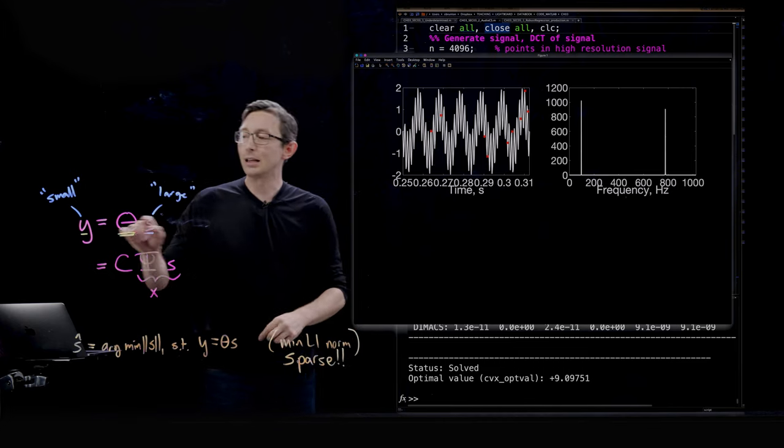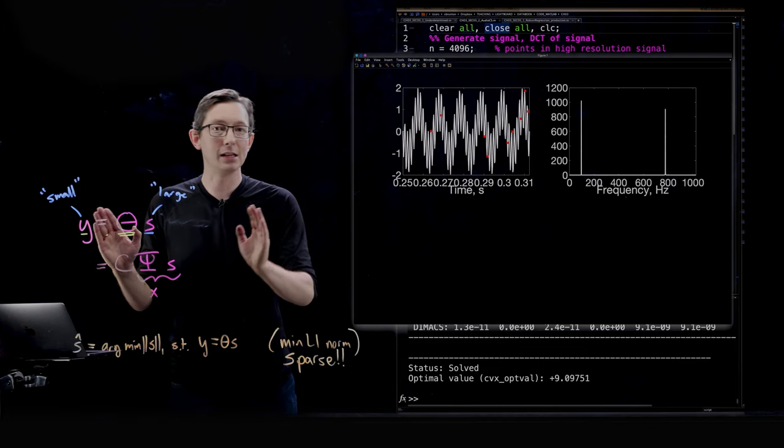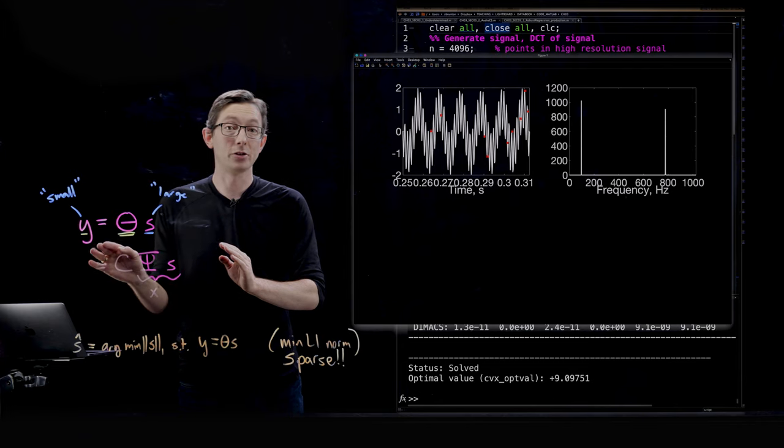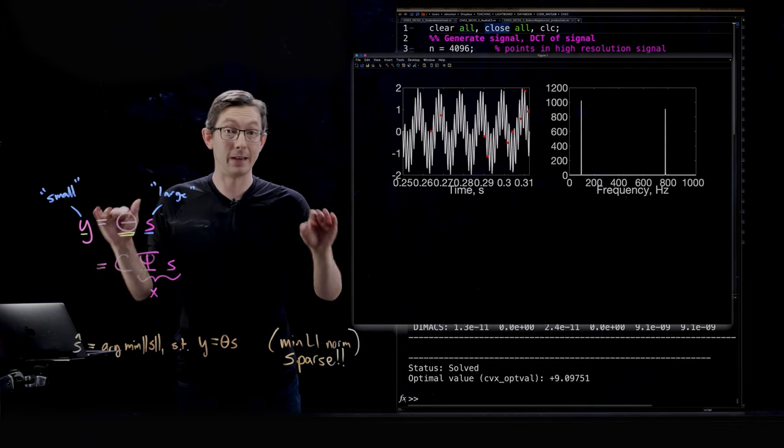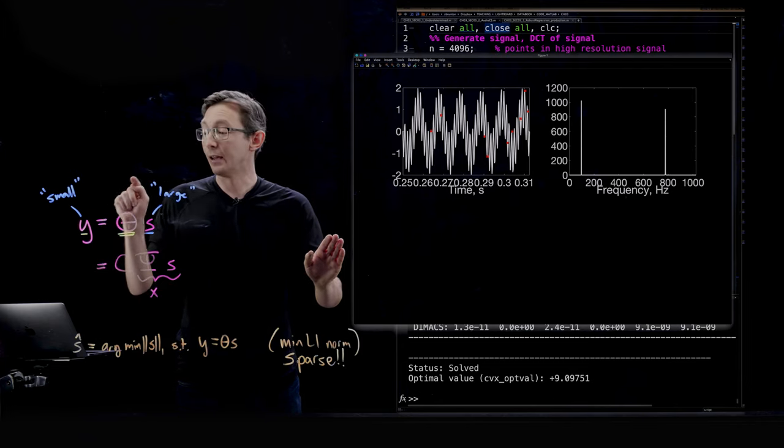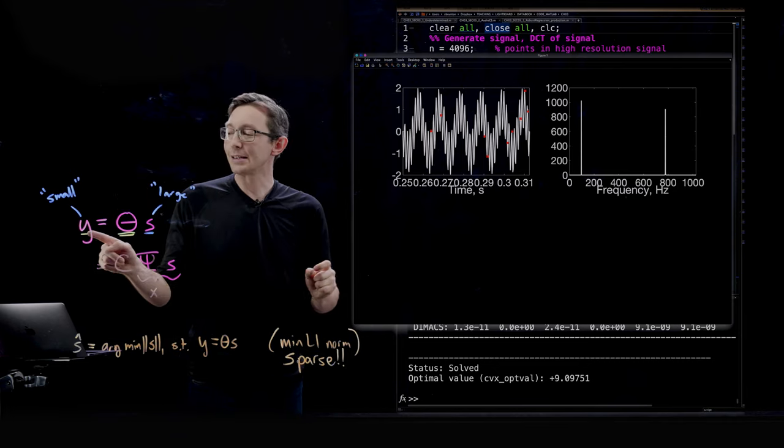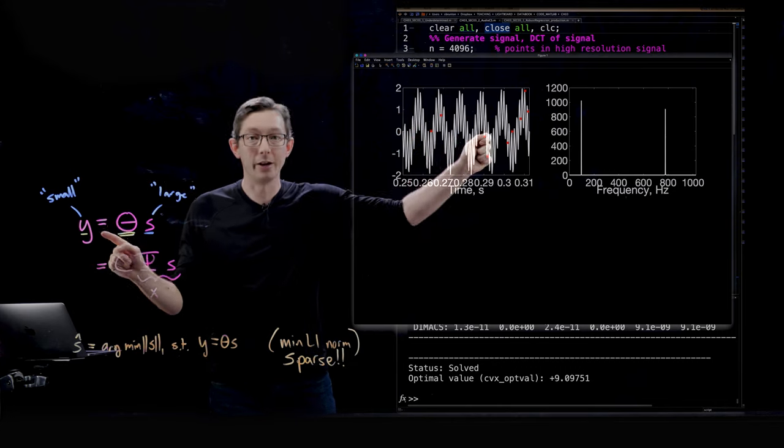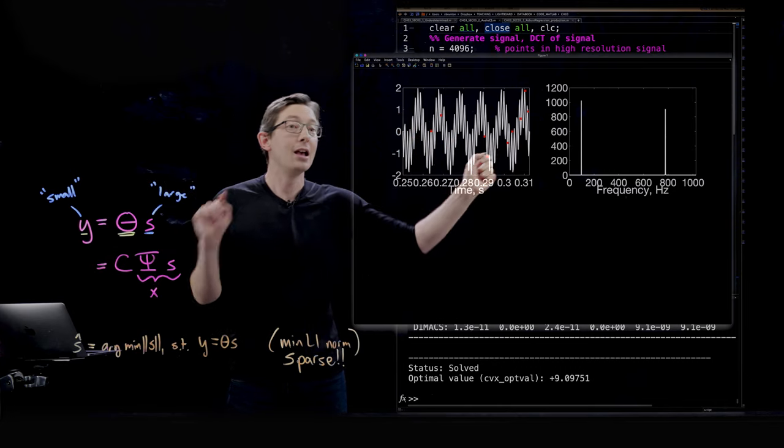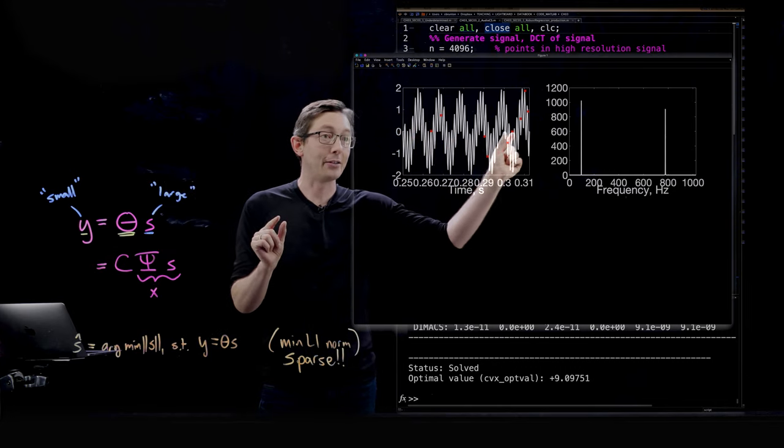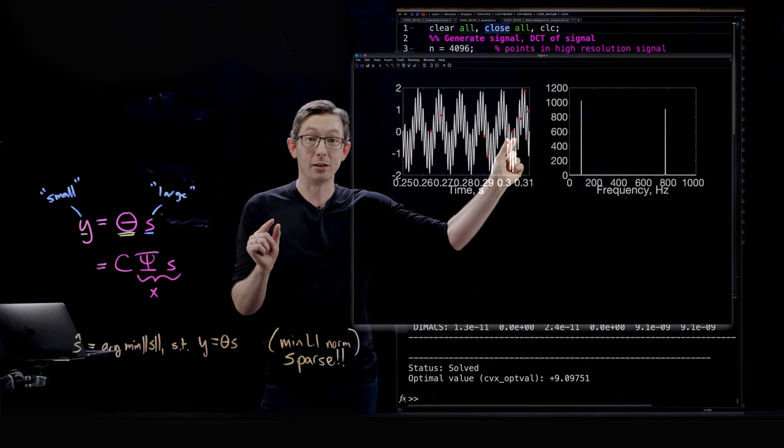And again because the catch is that if this was uniformly sampled at 128 Hertz this would absolutely fail. I guarantee it would fail if I uniformly sampled at 120 Hertz. But because I am randomly picking 128 points in time some of them end up being rather close together. So these are actually pretty close together points.